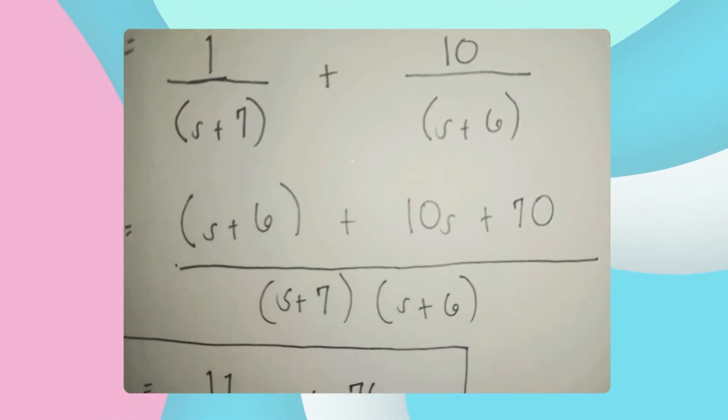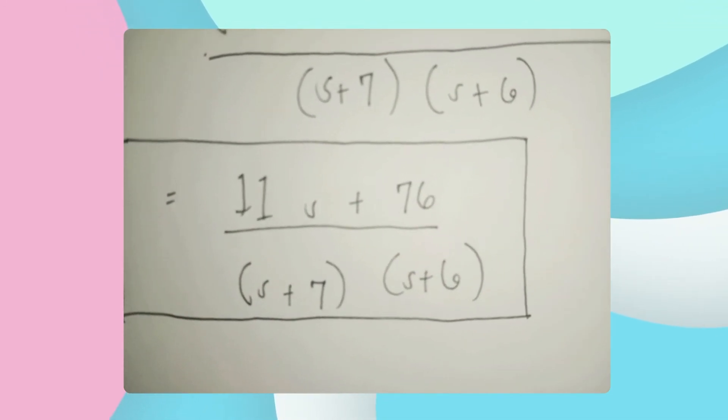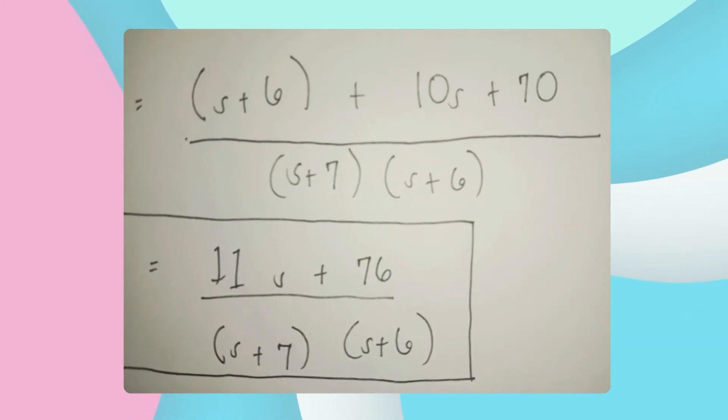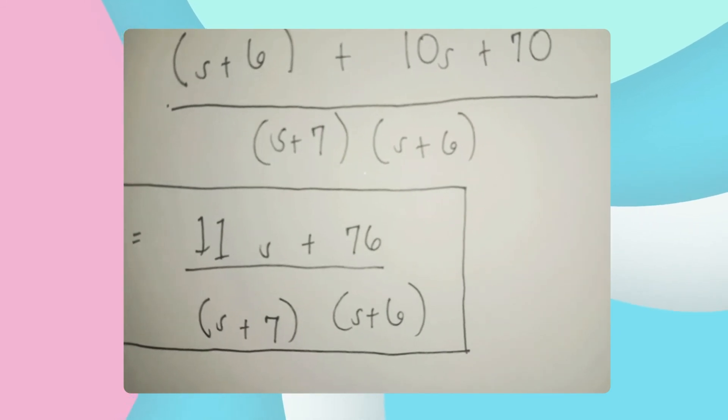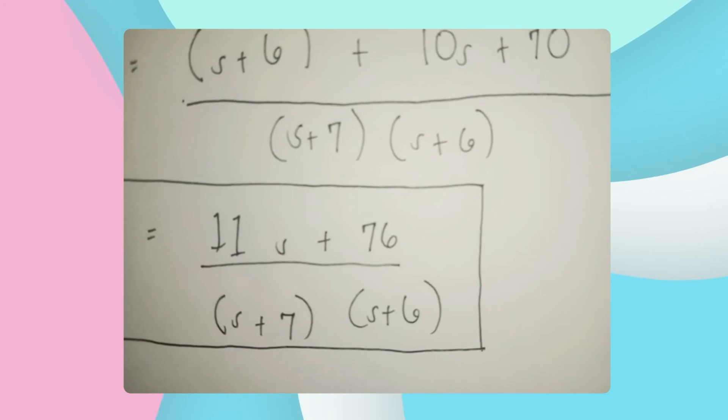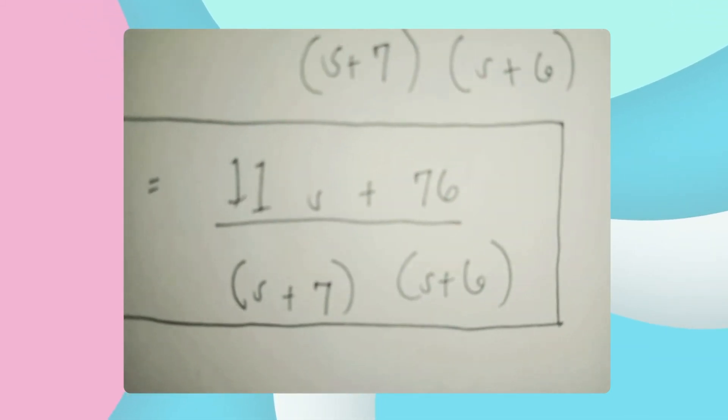The next and last thing to do is combine like terms of the numerator. 10s plus s equals 11s, plus 70 plus 6 equals 76 over s plus 7 times s plus 6. That is our final answer.